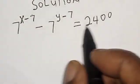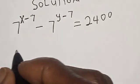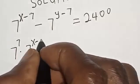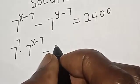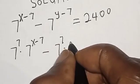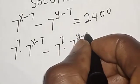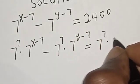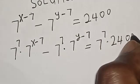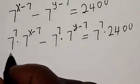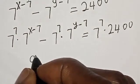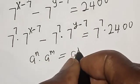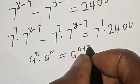Let's manipulate this equation by multiplying both sides by 7 raised to power 7. That is, 7^7 multiplied by 7^(x-7), minus 7^7 multiplied by 7^(y-7). Remember that a^n multiplied by a^m is equal to a^(n+m).